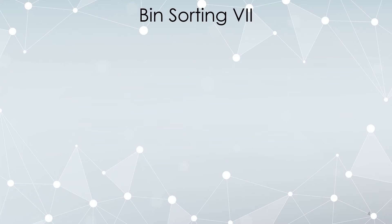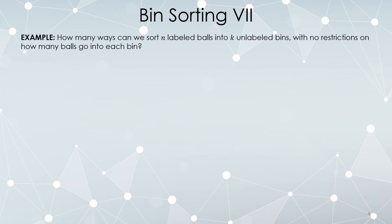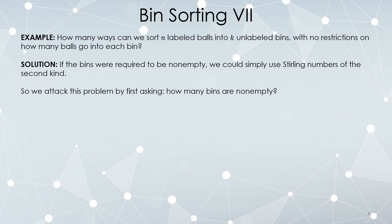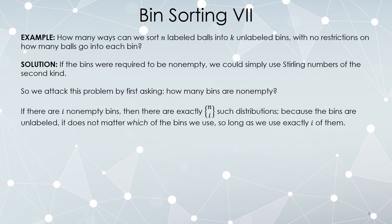Here's a slightly subtler bin sorting problem. Now we have n labeled balls and k unlabeled bins, with no restrictions on how many balls can go into each bin. If the bins had to be non-empty, these would simply be Stirling numbers of the second kind — which count how many ways to partition n elements into k non-empty subsets, equivalent to labeled balls into unlabeled bins with no bin left empty. To attack the general problem, we first ask how many bins are left non-empty. If there are i non-empty bins, we're partitioning n balls into i non-empty subsets, counted with Stirling numbers of the second kind.